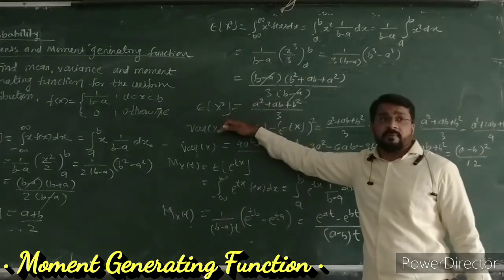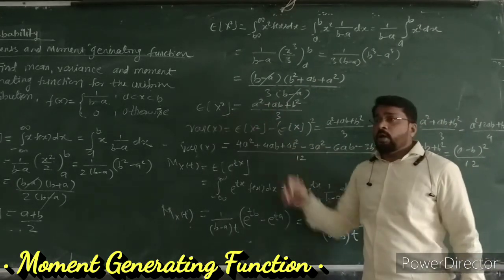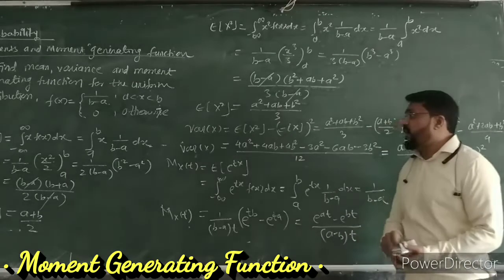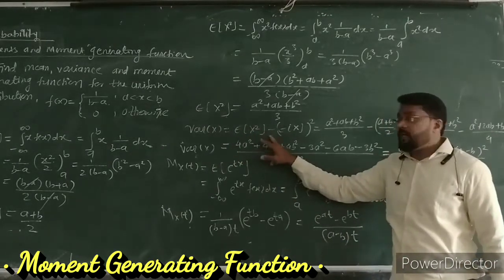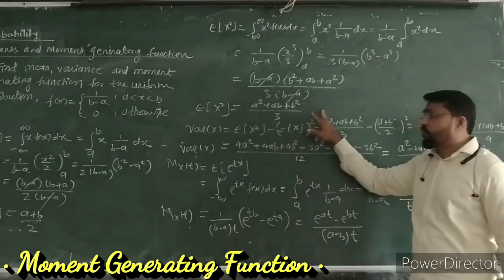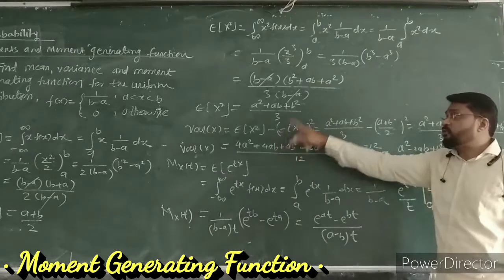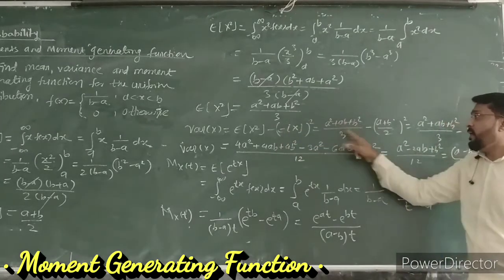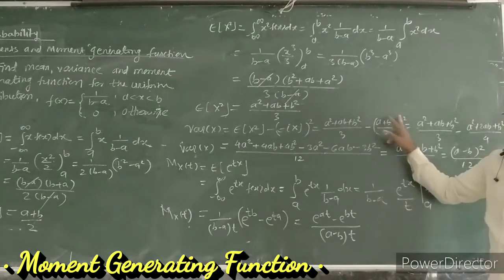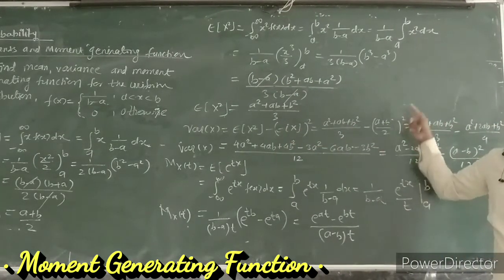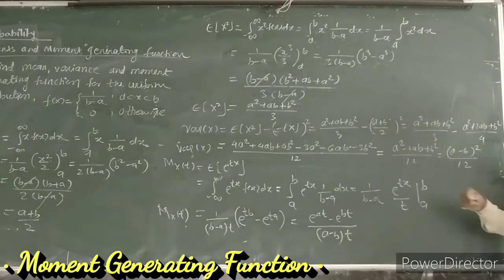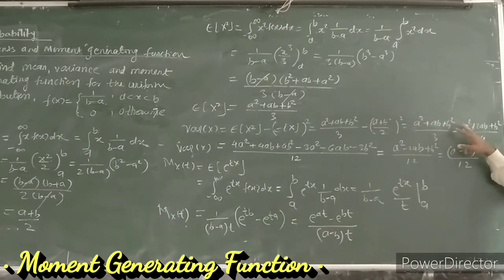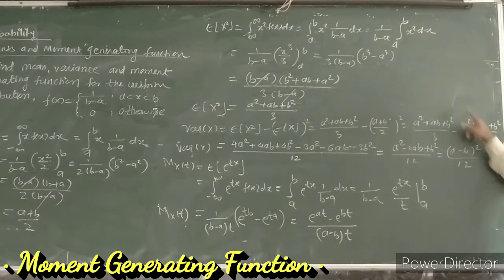Now variance is defined as E(x²) minus [E(x)]². We take E(x²) = (a² + ab + b²)/3 and subtract [E(x)]² = [(a + b)/2]² = (a² + 2ab + b²)/4.